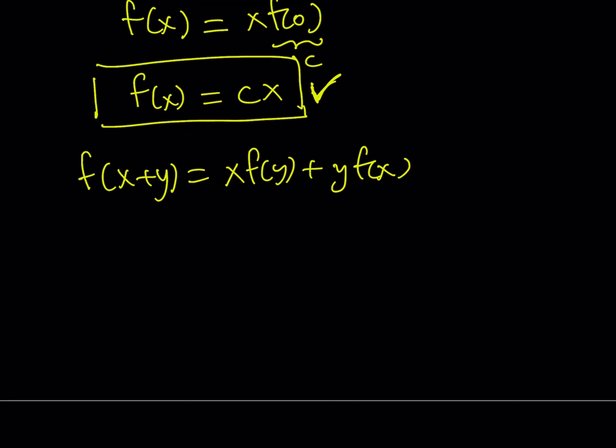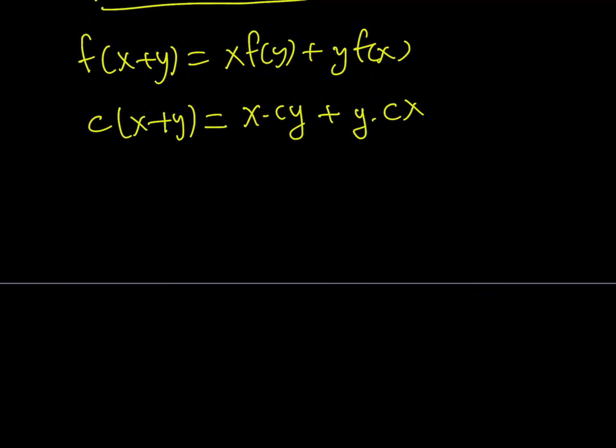So now if you replace f(x) with cx, you're going to get on the left-hand side, c times the quantity x plus y. On the right-hand side, you're going to get x times cy plus y times cx. And that is basically cxy plus cxy, which is 2cxy. 2c or not 2c. Okay. That's a good one. At least we got the c, not the b, but 2cxy. Awesome.